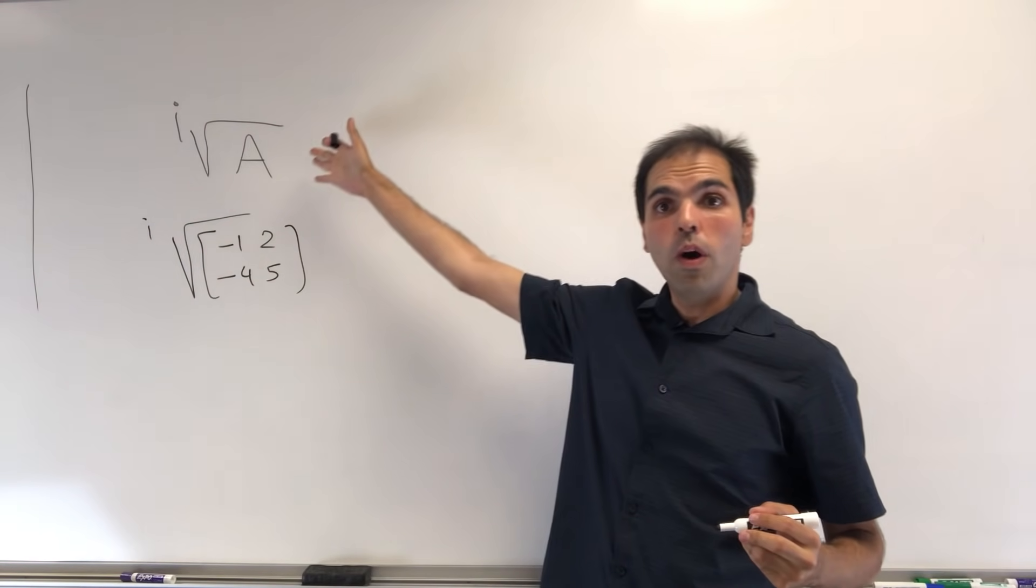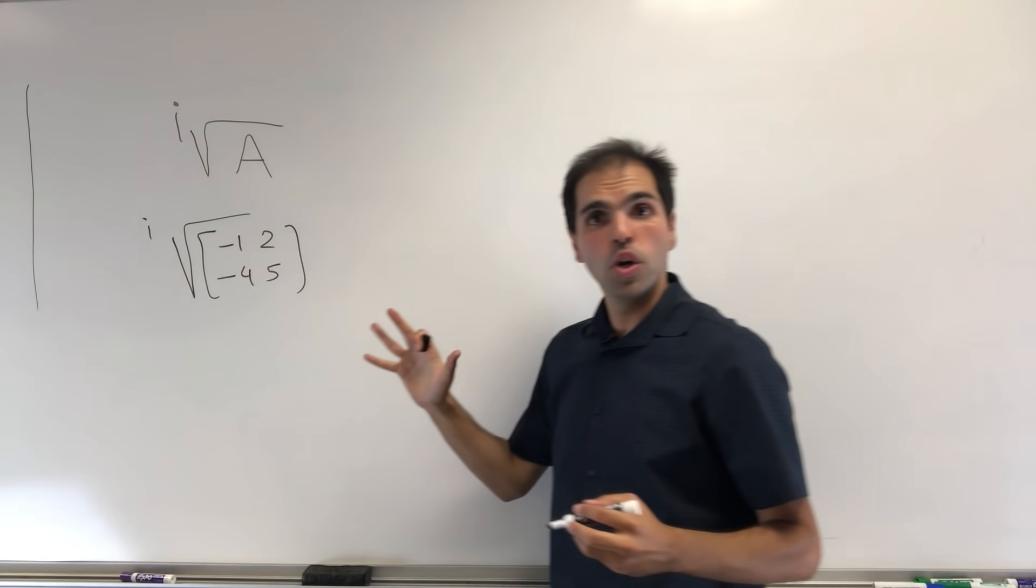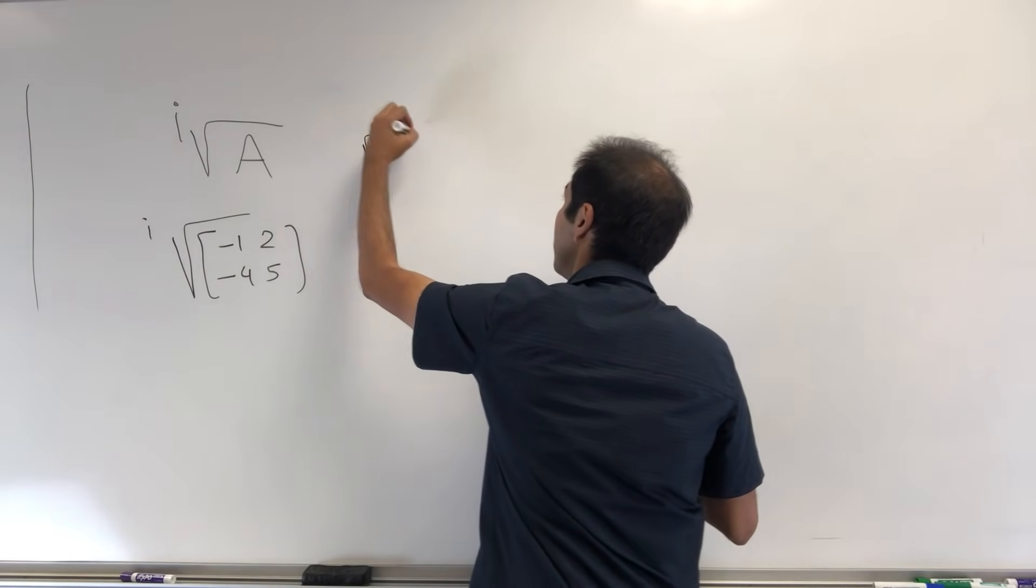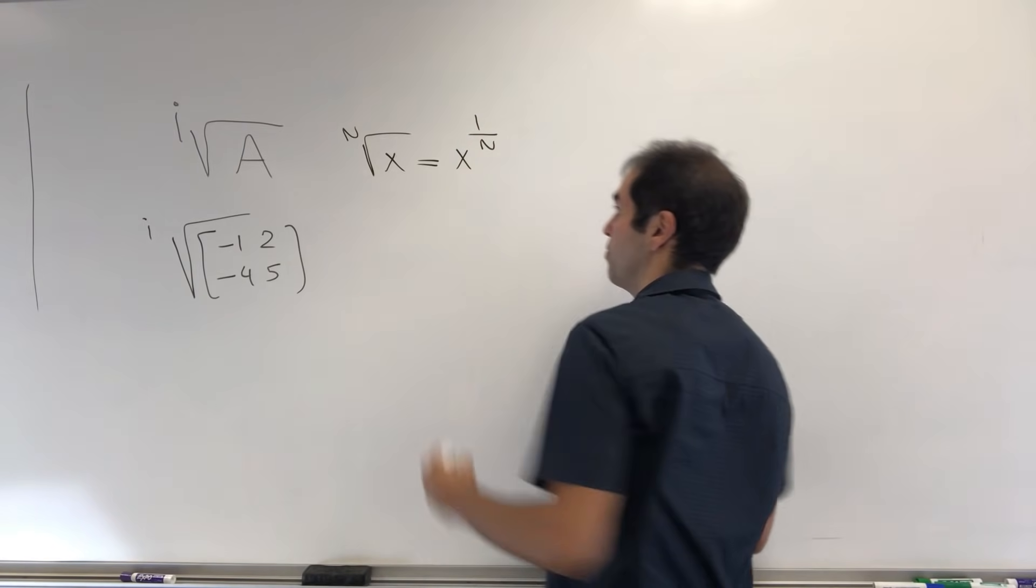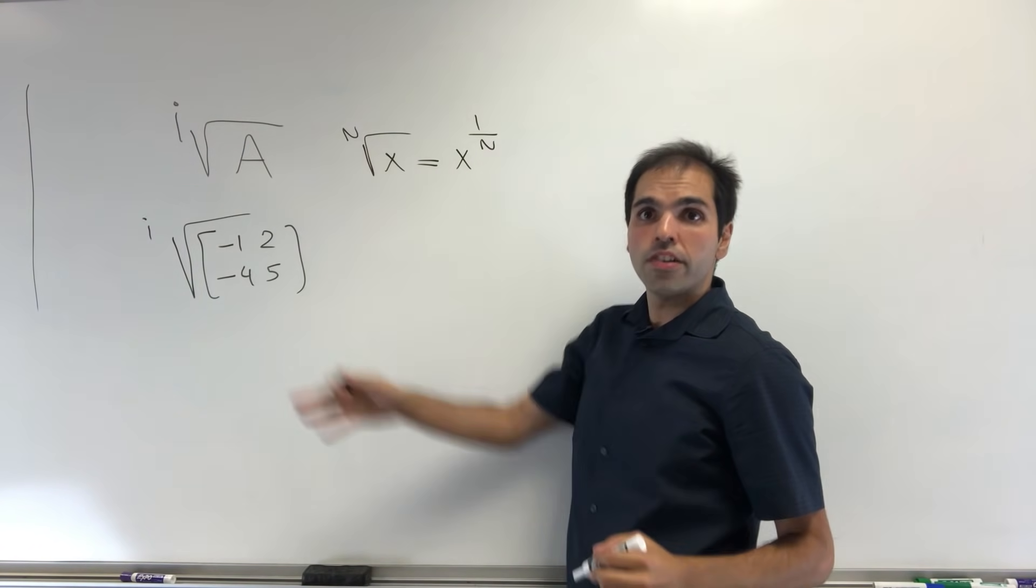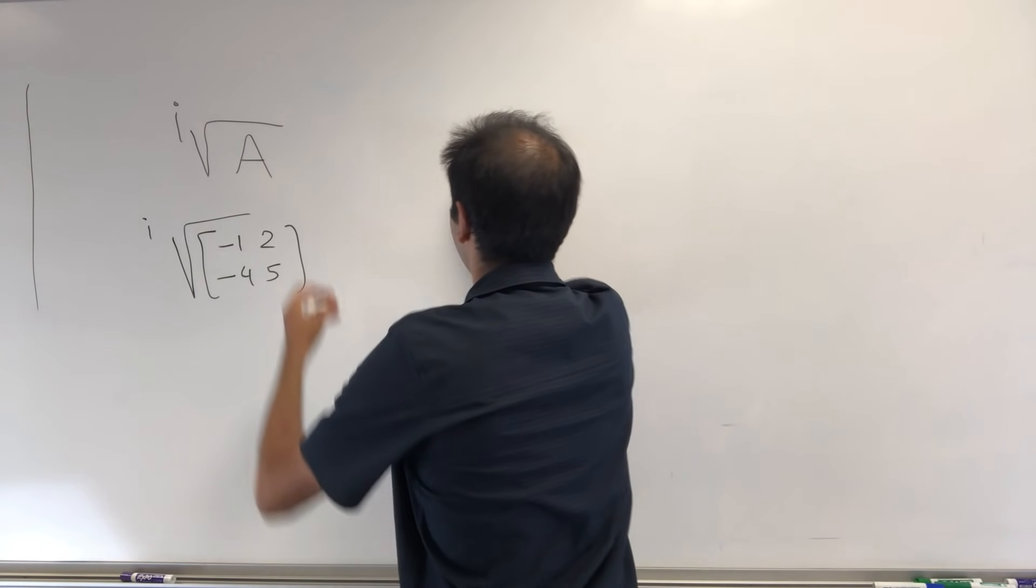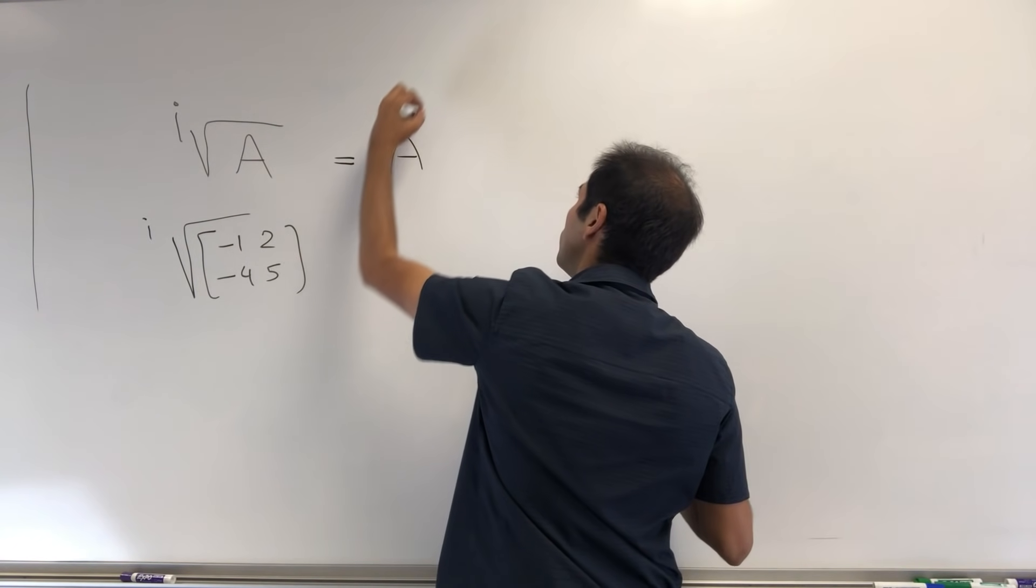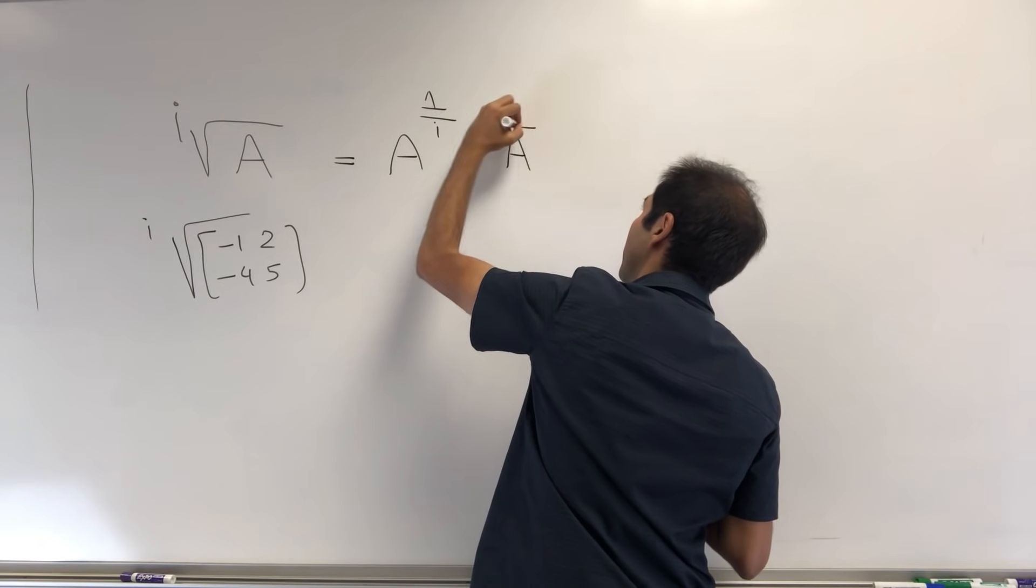Now what do I mean by finding the i-th root of a matrix? Notice, in general, the n-th root of x is none other than x to the 1 over n. So here, the i-th root of A is just A to the 1 over i, and that's A to the minus i.